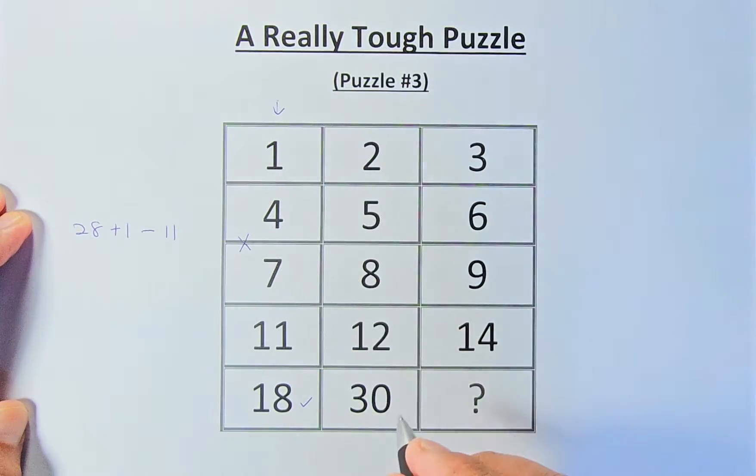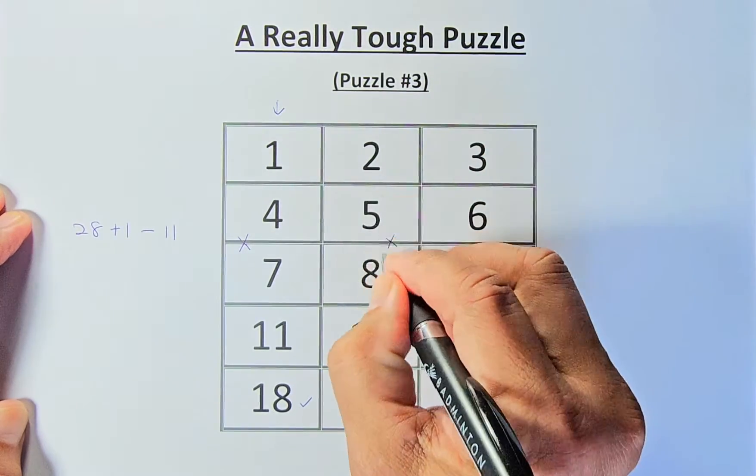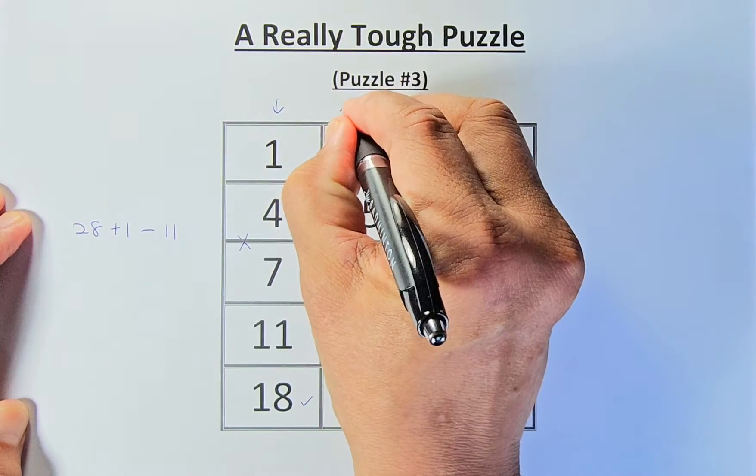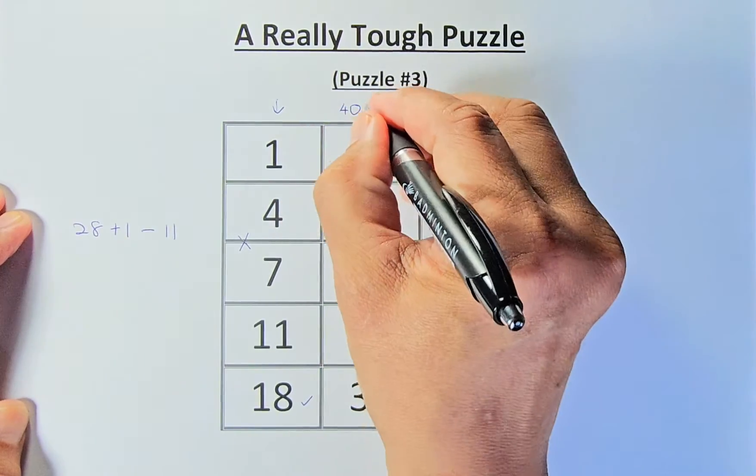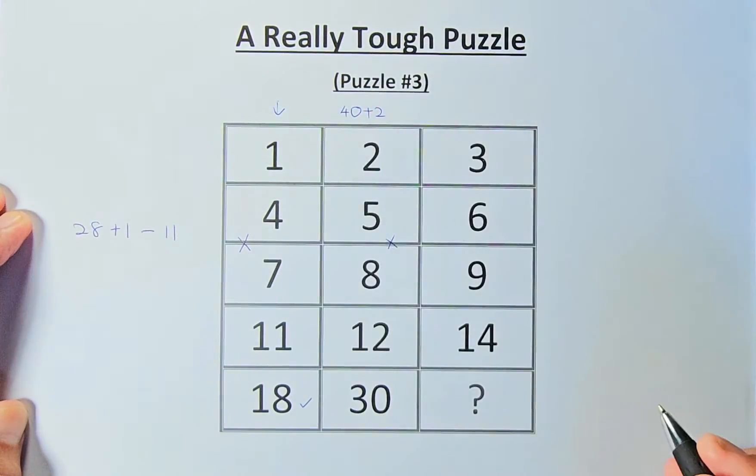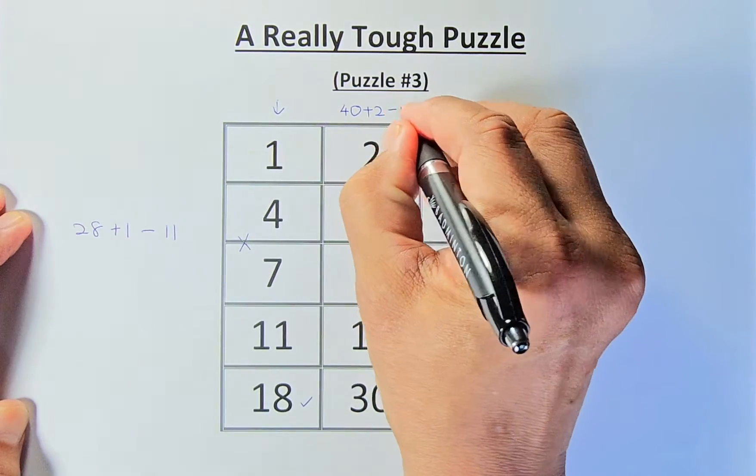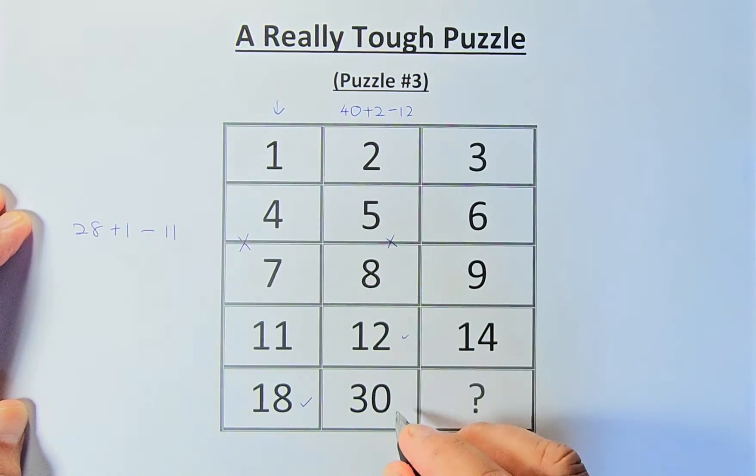Similarly, for the second column, we multiply 5 by 8, giving us 40. Then we add 2, giving us 42. Then we minus 12, and that gives us 30.